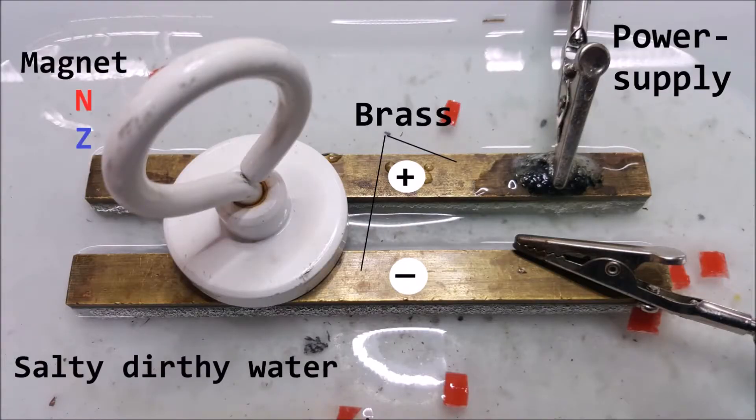Now please, pause this movie and first try applying the left hand rule yourself. The index finger represents magnet field and should point down, north to south. The middle finger represents current and should point towards you.